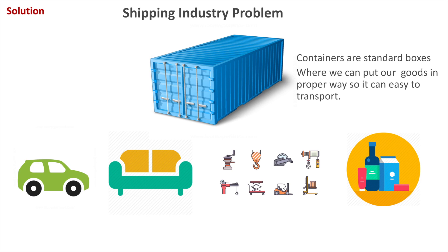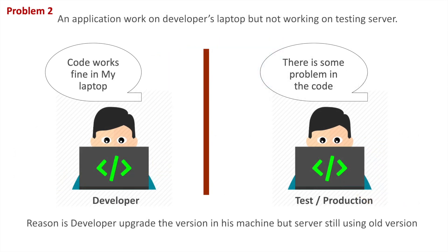Now let's understand another problem from the development side: an application working on the developer's laptop but not working on the testing server. The developer says the code is working on his side, but the deployment guy says there is some problem in the code. The reason is the developer upgraded the version on his machine but the server is still using the old version.